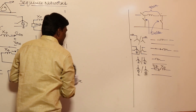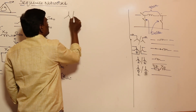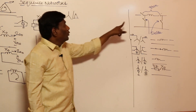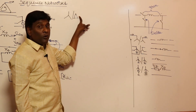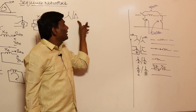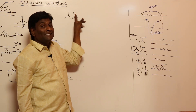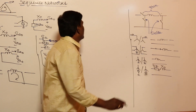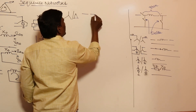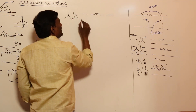For a star-delta transformer: on the star side, zero sequence currents cannot flow in lines — open the star switch. On the delta side, zero sequence currents can flow inside the delta phases — close the delta switch — but cannot appear in the delta lines. So the zero sequence network has an open switch on the star side, the transformer reactance X0, and the delta internal circulation represented but isolated from the line.